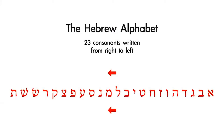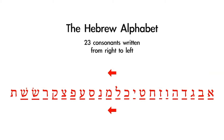Let's say these letters together, working from right to left. There's no need to memorize anything at this point. Just follow along and repeat after me as we work through the 23 consonants of the Hebrew alphabet: Aleph, Beit, Gimel, Dalet, He, Waw, Zayin, Chet, Tet, Yod, Kaf, Lamed, Mem, Nun, Samek, Ayin, Pe, Tzadeh, Qof, Resh, Sin, Shin, Tau. These are the 23 letters or consonants of the Hebrew alphabet.